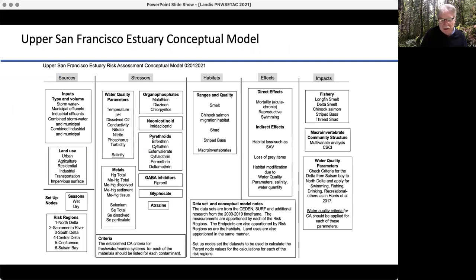The upper San Francisco estuary conceptual model, this is without the lines of influence, just the boxes. We have a variety of different kinds of sources, stormwater, variety of effluents, land uses, and the material that comes in from those, like urban, agriculture, impervious surfaces. For our setup nodes, we have two seasons, we're in California, wet and dry, and then we have our risk regions to get the locations.